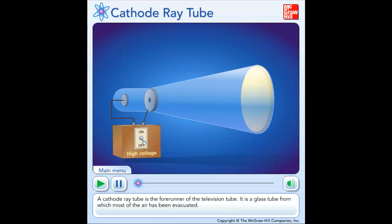A cathode ray tube is the forerunner of the television tube. It is a glass tube from which most of the air has been evacuated.